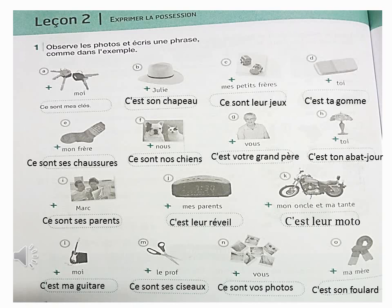Après cette étape, je peux regarder le complément — le mot qui est après les points — pour bien choisir son, sa, ou ses. S'il y a après les points un nom masculin singulier, alors je choisis son. S'il y a après les points un nom féminin singulier, je choisis sa. S'il y a après les points un nom pluriel, je choisis ses.